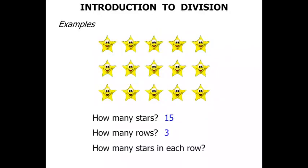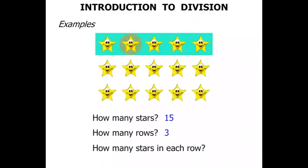How many stars in each row? Well let's look at that first row. They're all the same. The first row there, let's count how many stars in this row. 1, 2, 3, 4, 5. There are 5 stars in each row.